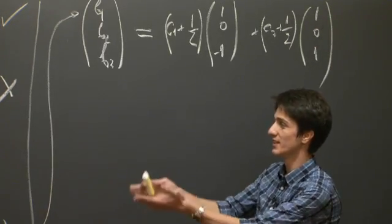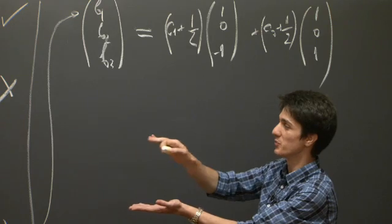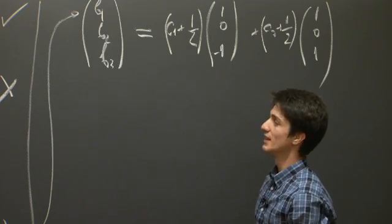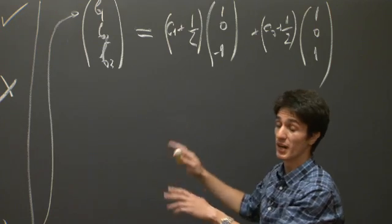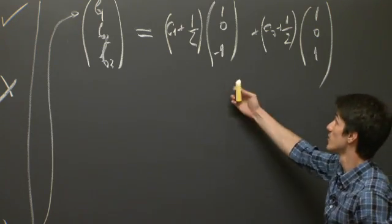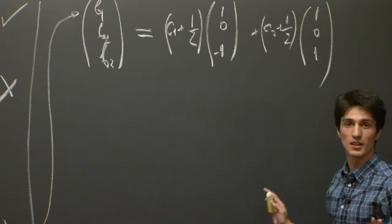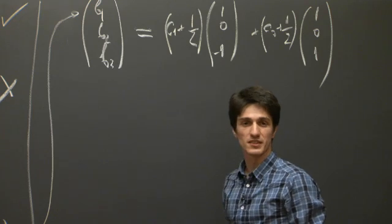So indeed, the points (b1, b2, b3) are described by the linear span of (1, 0, -1) and (1, 0, 1). So it is a vector subspace itself.